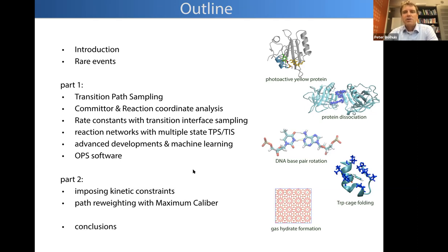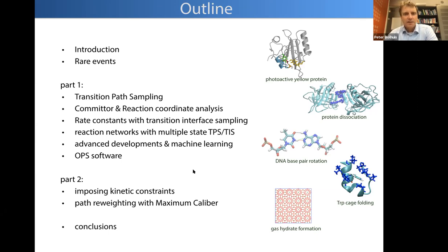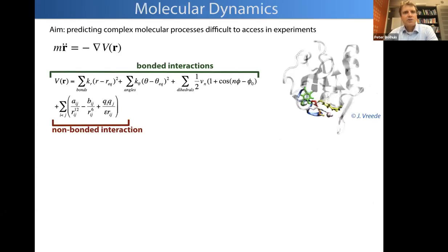So, I'll briefly introduce the notion of rare events and why we need transition path sampling. I'll show you how we do it, how you can sample paths, analyze them, enhance TPS for reaction networks or multiple state systems, and show some advanced developments. This is a workshop with a pedagogical part, so if you have questions or something is unclear, please raise your hand and interrupt me.